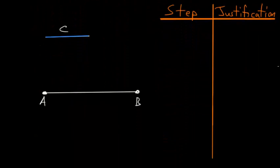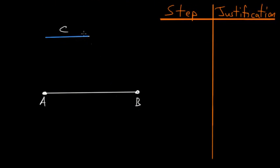We can start with two lines, which we can call A, B, and C, and our goal is to cut off a piece of this line AB equal to this line C.